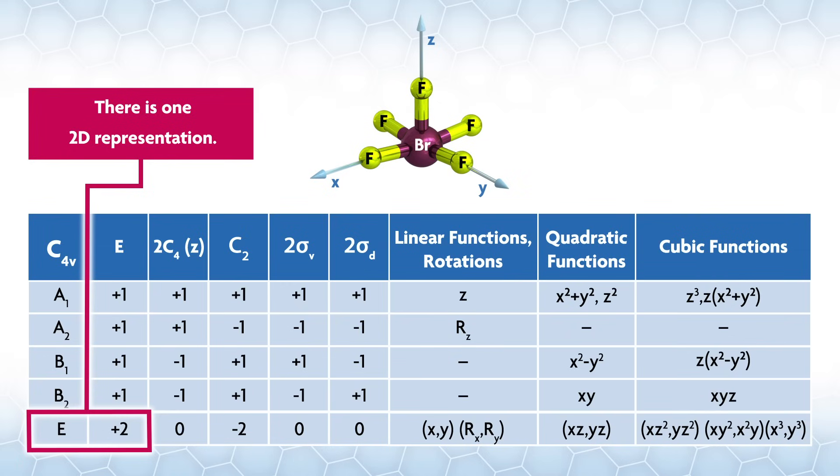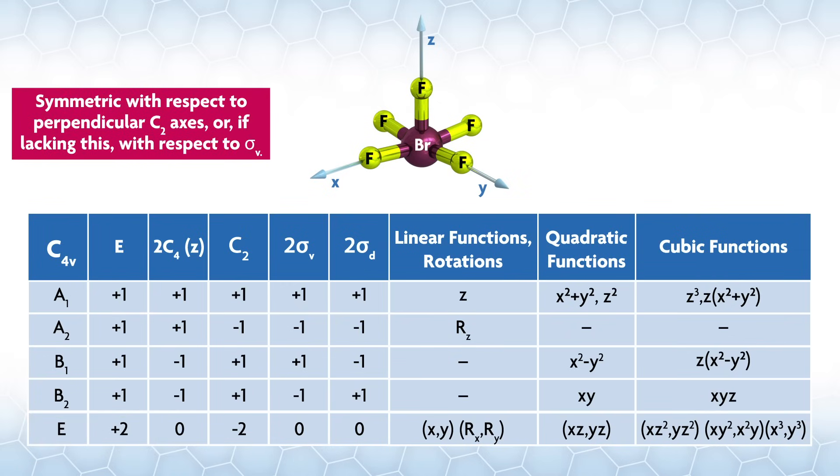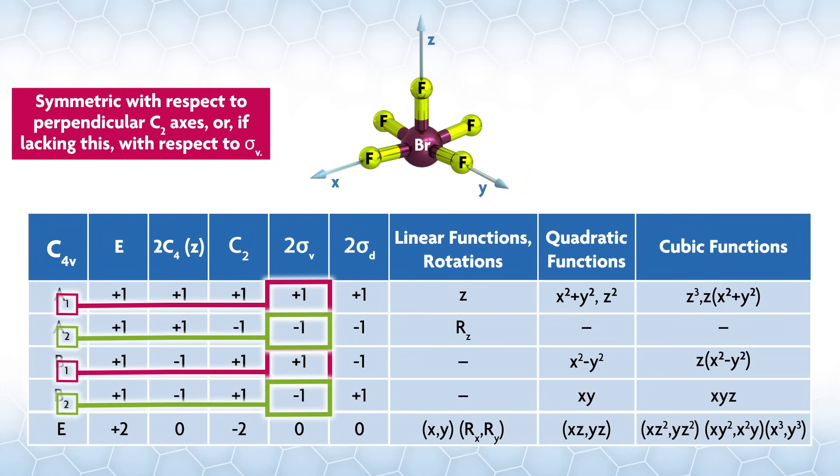So now we have two A reps and two B reps, and we want a different name for all of them. So we go to rule 2, which says that a subscript 1 or 2 means that the representation is symmetric or anti-symmetric with respect to the perpendicular C2 axis, or, if lacking this, with respect to sigma v. Our point group is C4v, so there are no perpendicular C2 axes. Looking at sigma v, we get the representations with a plus one under this operation a subscript 1, and the ones with a negative one a subscript 2. Now all our labels are unique, so we can stop.